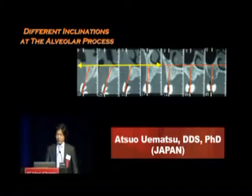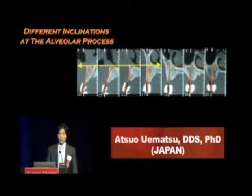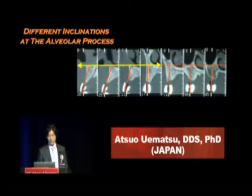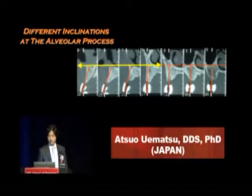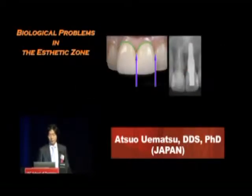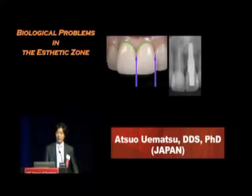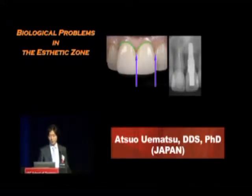As you can see, there are different inclinations at the alveolar process. For example, in the aesthetic zone from a central incisor to a first premolar, there is a large discrepancy between the proposed angle of the fixture and the alveolar process. Recently, we have used implants in the anterior area, and in some cases we have encountered aesthetic problems with interdental papilla and gingival levels.